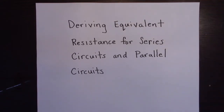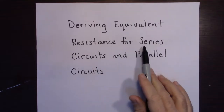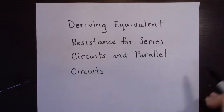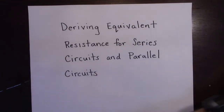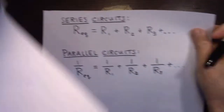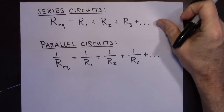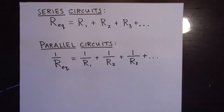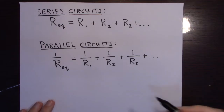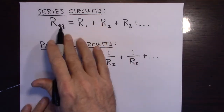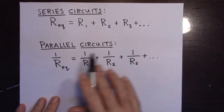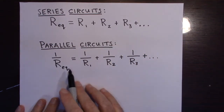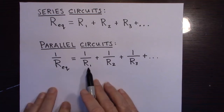In this video we're going to be deriving the equivalent resistance for series circuits and for parallel circuits. Here are the equations we're going to derive — if all you want are these equations then you probably don't need to watch this video, but if you're curious about the derivation, I'm going to derive them. For series circuits, you just add up the resistors, but for parallel circuits, 1/R_equivalent equals the sum of the reciprocals of the resistors.